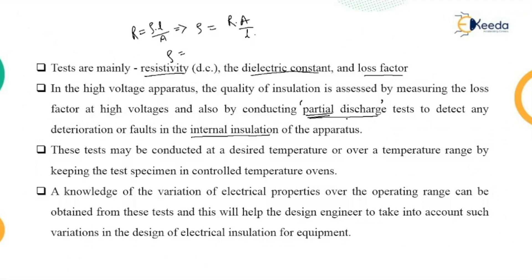These tests may be conducted at high voltage, high frequency, and at desired temperatures over a temperature range by keeping the test specimen in controlled temperature ovens — similar to ovens used for baking in kitchens. A knowledge of the variation of electrical properties over the operating range can be obtained from these tests, and this helps the design engineer to account for such variations in the design of electrical insulation for equipment. This concludes the introduction to non-destructive testing of dielectric materials, the first topic of the chapter on high voltage testing of electrical power apparatus and high voltage laboratories.